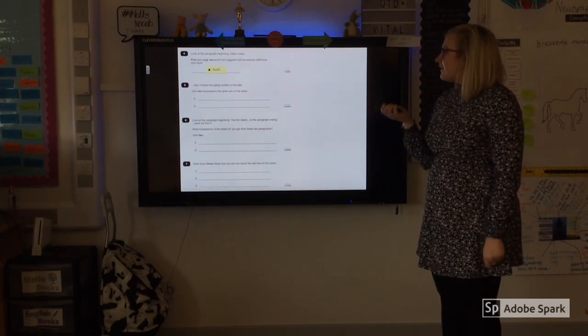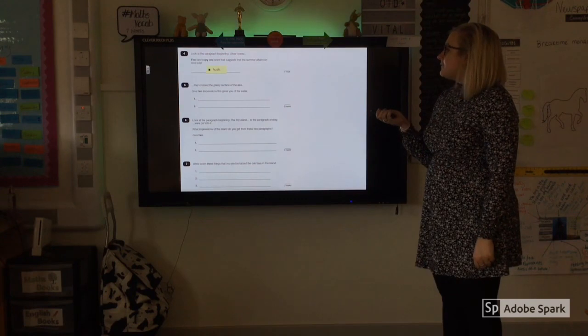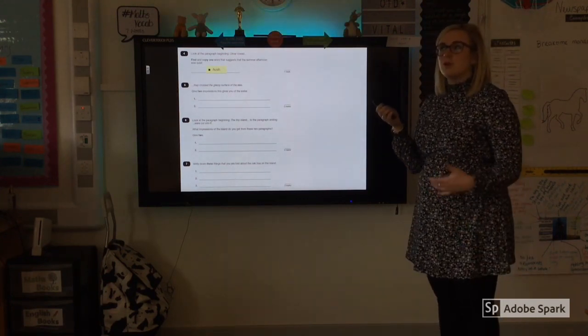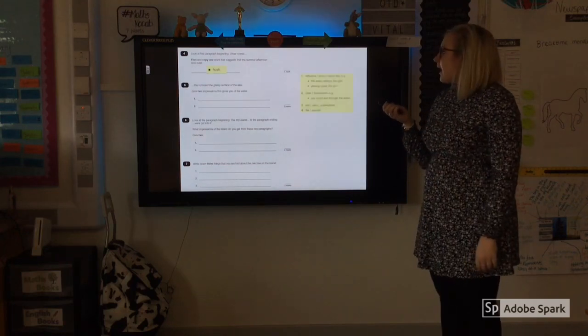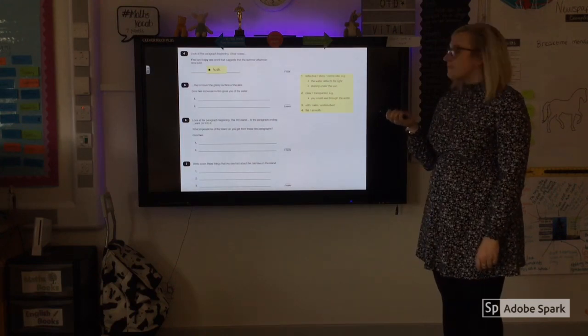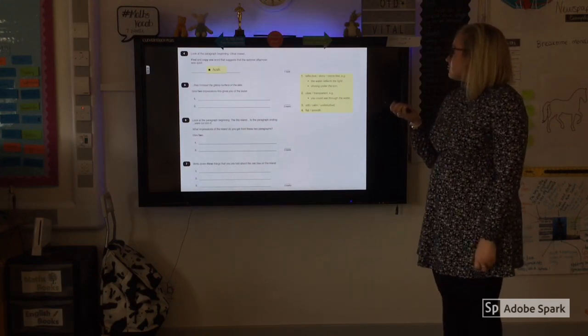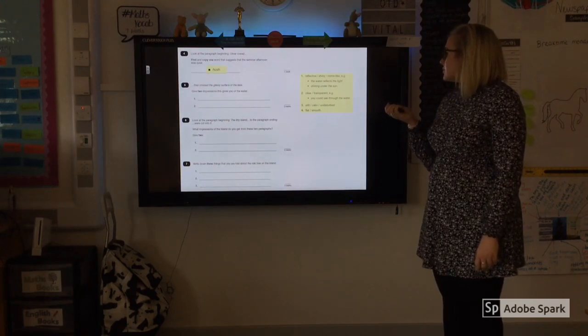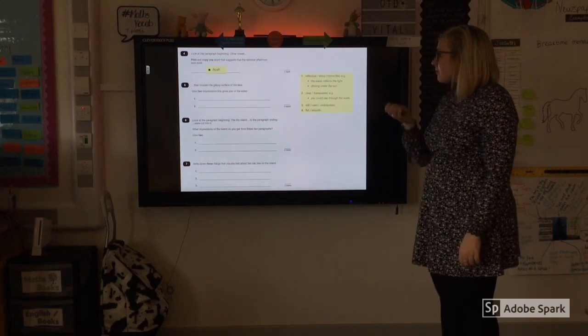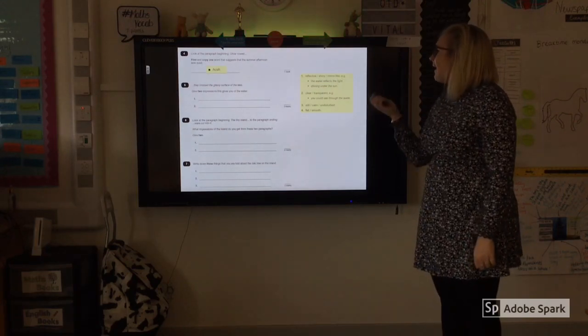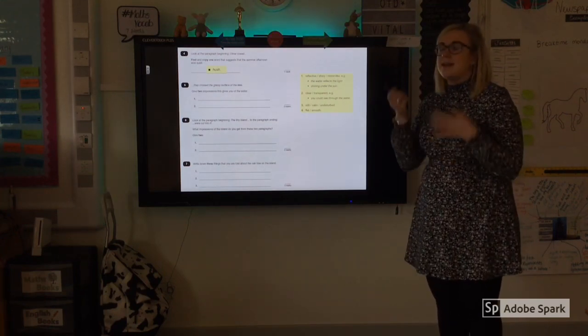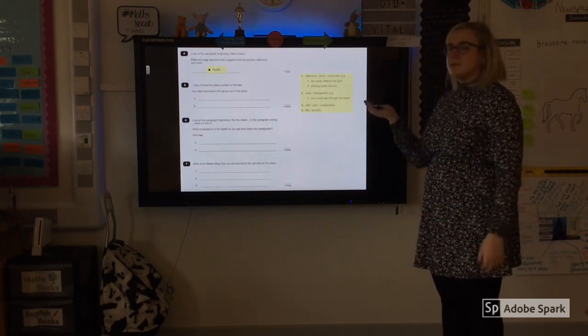Number five then. They crossed the glassy surface of the lake. Give two impressions this gives you of the water. So what do they feel in the text that the water looks like? So you could say that it was reflective, shiny or mirror-like, that it was clear or transparent, still calm or disturbed, flat and smooth. So again, if you were to choose the two impressions of clear and transparent, you wouldn't get that because they are the same meaning. If it's clear, it is transparent. You would have to choose different words.